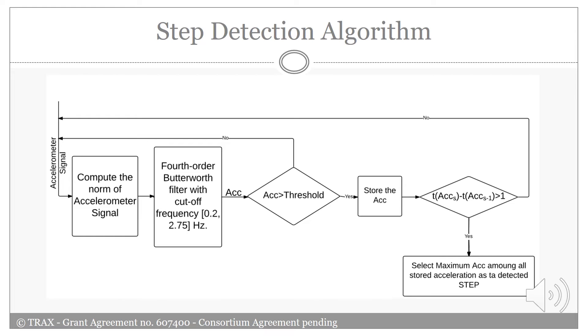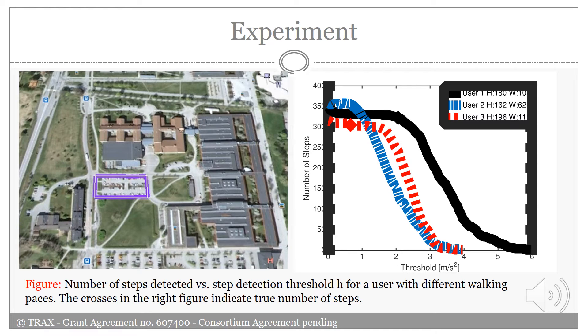Defining the suitable threshold in order to correctly detect the steps is one of the difficulties of PDR algorithms. The threshold needs to be adjusted for different people with different characteristics. In order to make our point clear, we have designed an experiment in which three people with different attributes, height and weight, and walking behavior have participated. All of them walk along the same trajectory that is indicated in the left figure. In order to have a better classification per person, they were asked to walk in a slow pace and count their steps, so that this can be used as the ground truth.